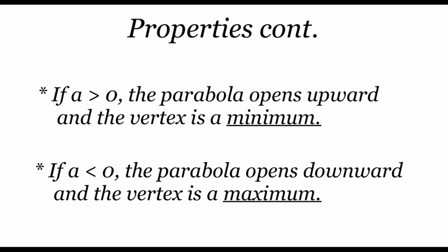The vertex could be either a maximum or a minimum point depending on which way the parabola opens. If that a value on our x squared is a positive number, then our parabola is going to open upwards — it looks like a u shape — and that vertex is going to be at the bottom, making it a minimum value. But if that a value out in front is a negative number, then our parabola opens downwards like an n shape, and that vertex is at the highest point, so we call that our maximum value.